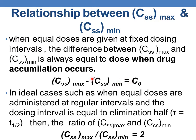Another ideal situation: when equal doses are administered at regular intervals and the dosing interval tau is equal to the elimination half-life of the drug, then the ratio of CSS max to CSS minimum will be equal to two. That is, CSS max divided by CSS minimum equals two.